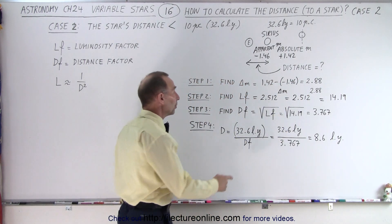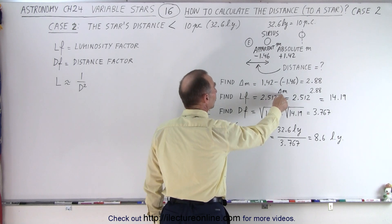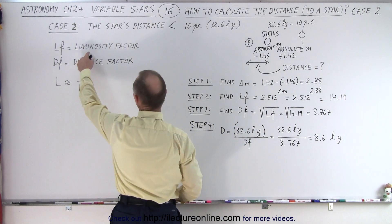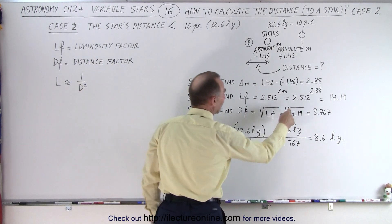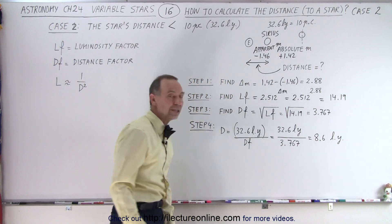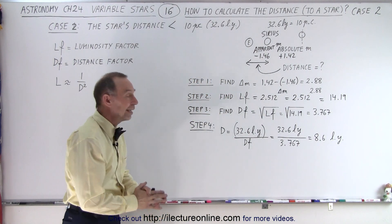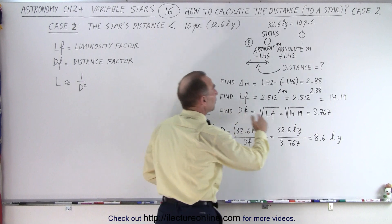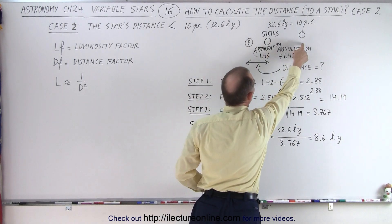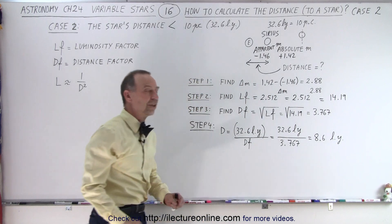Then we take the number 2.512 and raise it to the difference in magnitudes to calculate the LF. The LF stands for the luminosity factor. So we get 2.512 raised to the 2.88 power, which is 14.19, which means that when the star is in its actual position, it appears a little bit more than 14 times brighter than if it were to be at the standard distance of 10 parsecs.